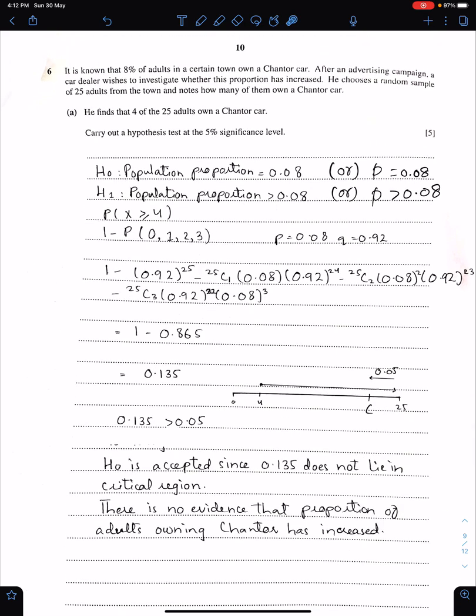Question number 6. It is known that 8% of adults in a certain town own a C car. After an advertising campaign, a car dealer wishes to investigate whether this proportion has increased. So this test is upper tail, in which we have greater sign in H1. He chooses a random sample of 25 adults from the town and notes how many of them own a C car. This situation is binomial with N 25 and P 0.08. Point A: He finds that 4 of the 25 adults own a C car. This is the test value. We need to perform the test at 5%. So H0 means P is 0.08, and H1 means P is greater than 0.08. Or you can write population proportion 0.08, population proportion greater than 0.08.